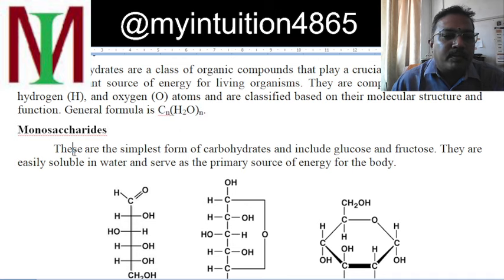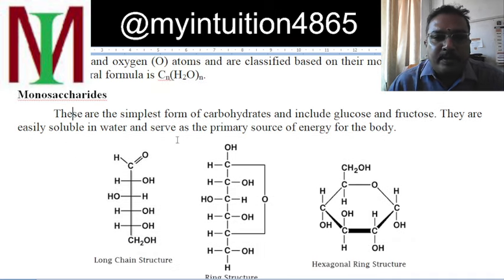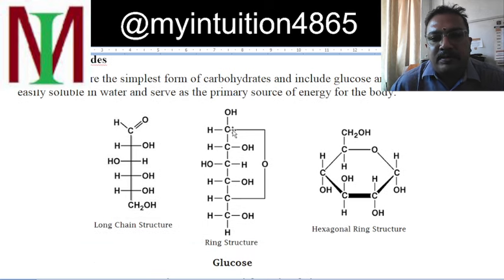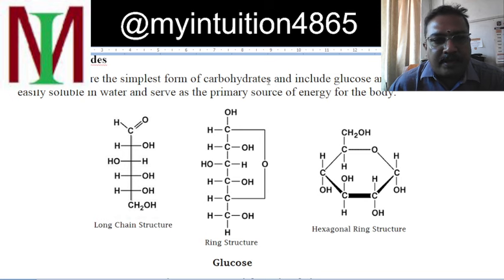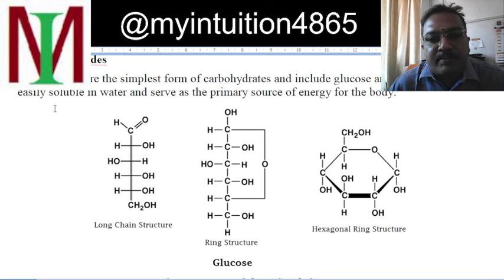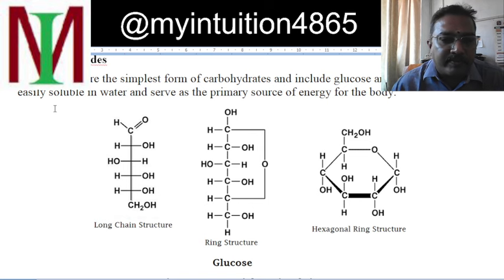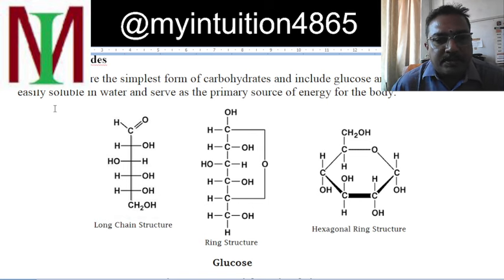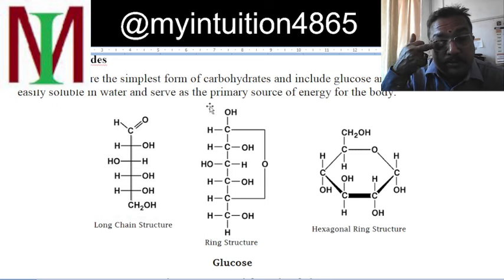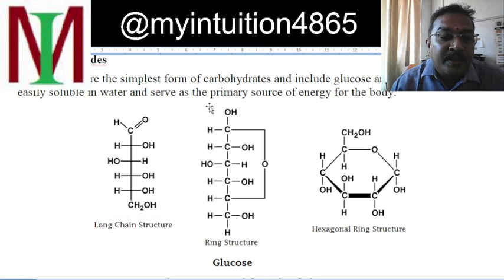The classification is simple. Monosaccharide — mono means single, only one. This form of carbohydrate includes glucose, fructose, etc. They are easily soluble in water and are the primary source of energy for our body. Whenever we eat plant-based food, what we are getting is essentially glucose, which is used directly by our body.